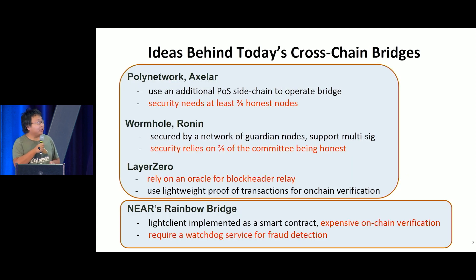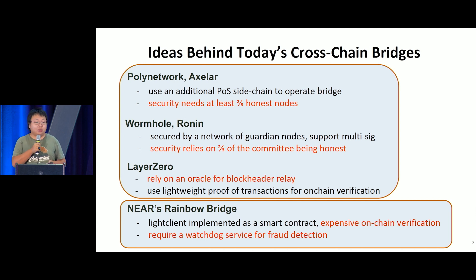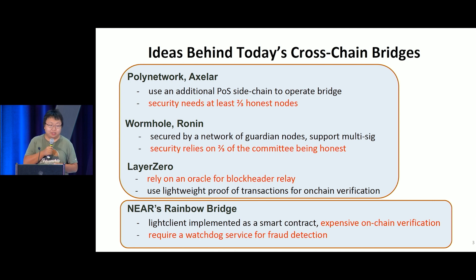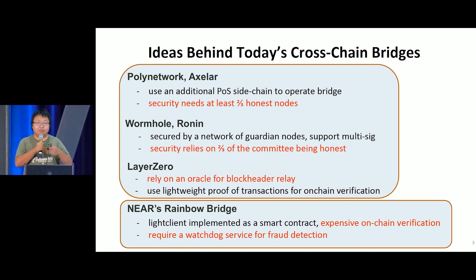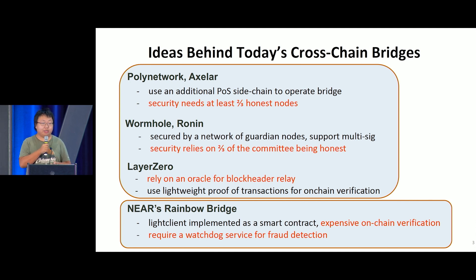Let's look at existing bridges. I divided them into two categories. The first one is a committee-based bridge, and the second one is an optimistic bridge. The first one requires a committee where two-thirds of the committee members are honest — this is a security vulnerability and some of them have actually been hacked. The second one, the optimistic bridge, doesn't have such security vulnerability; however, they have a performance issue where latency is too high for practical use.